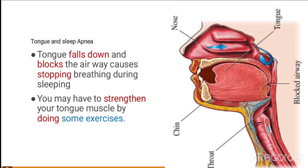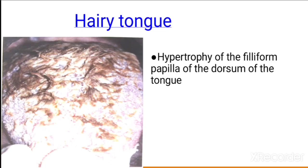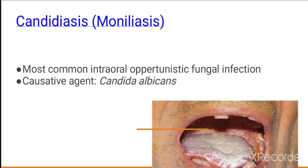In sleep apnea, the tongue falls down and blocks the airway, causing cessation of breathing during sleep. To address this, tongue muscles may need to be strengthened by exercises. Hairy tongue involves hypertrophy of the filiform papillae on the dorsum of the tongue which appear like hairy structures. Candidiasis is the most common intraoral opportunistic fungal infection, with the causative agent being Candida albicans.